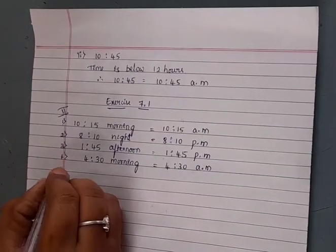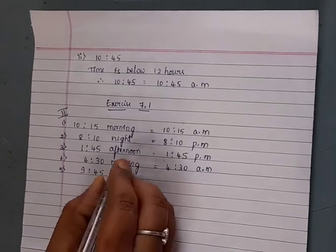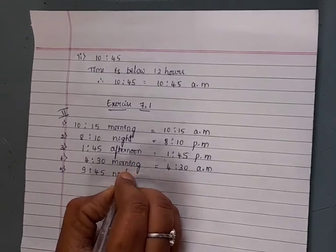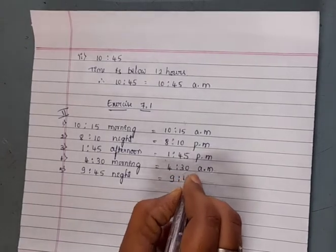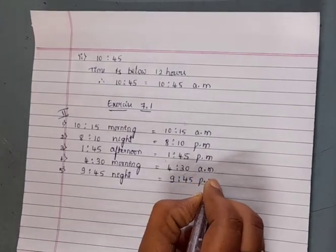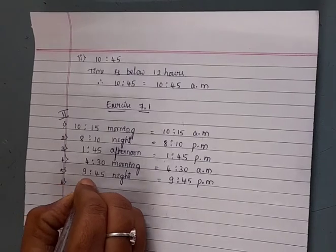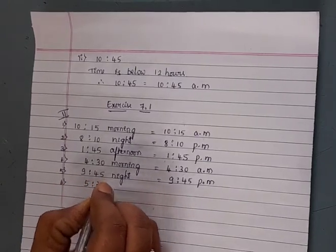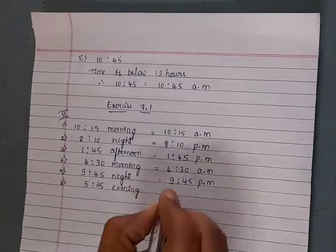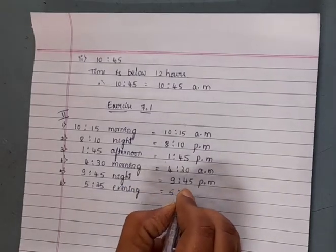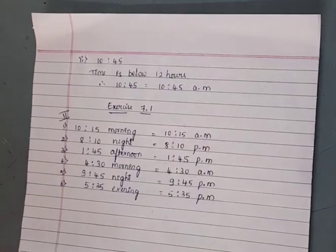Fifth: 9:45, night — 9:45 PM. Sixth: 5:35, evening — 5:35 PM.